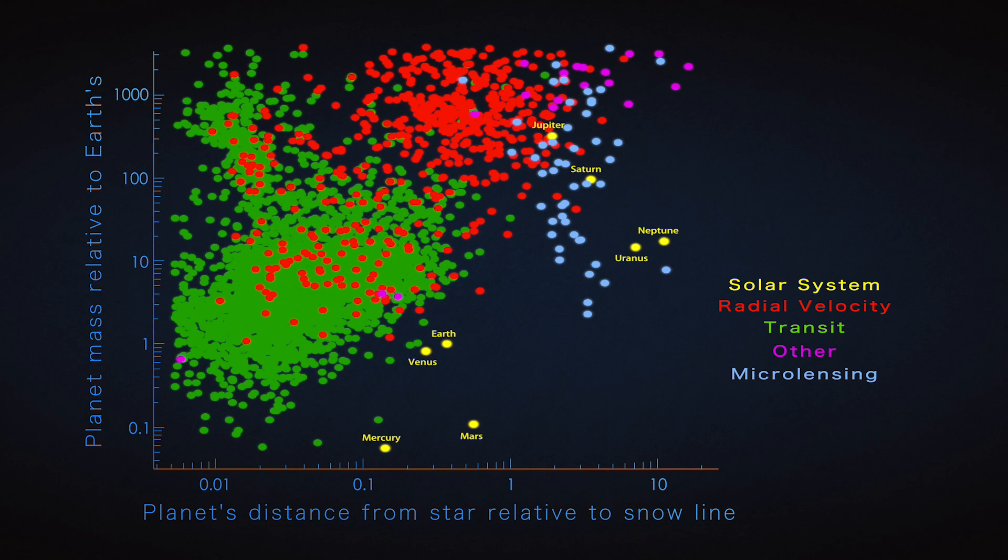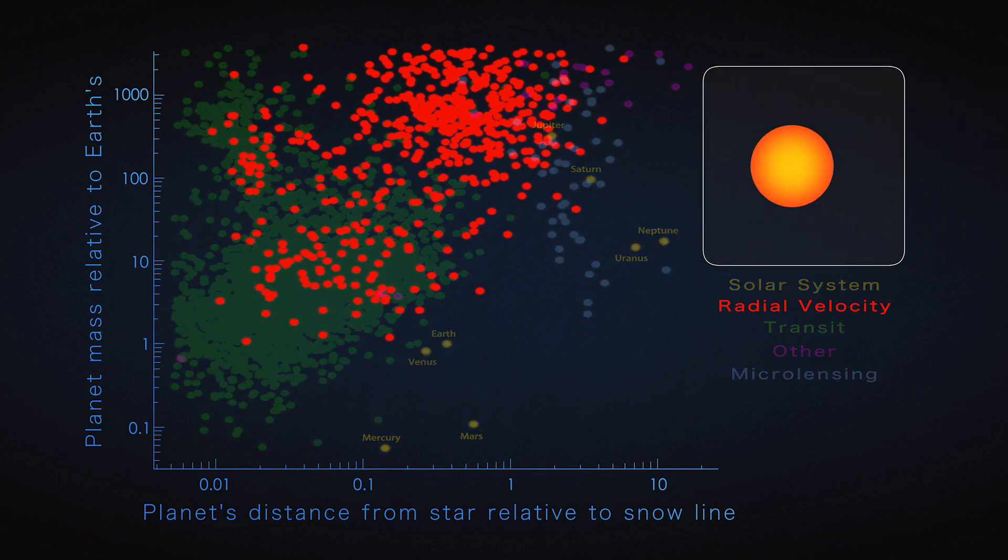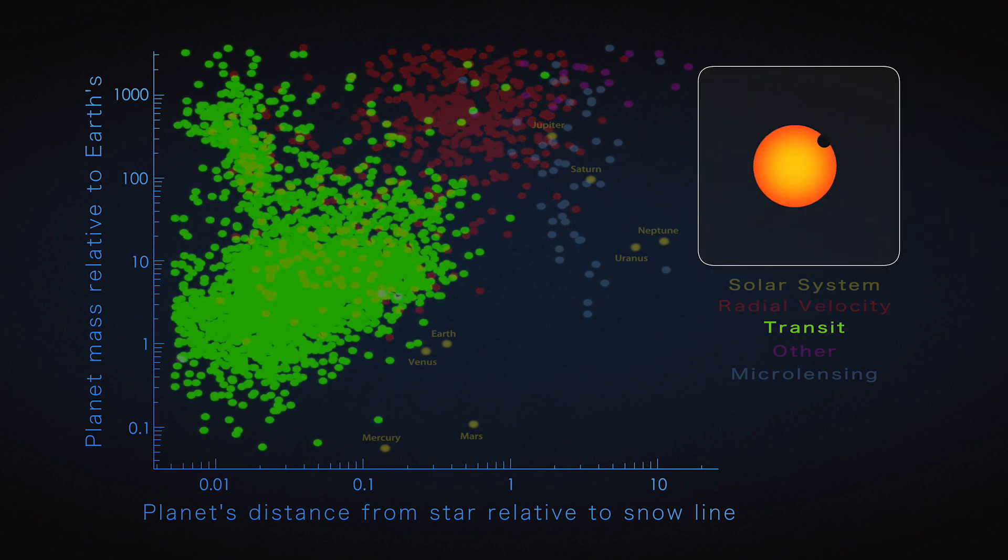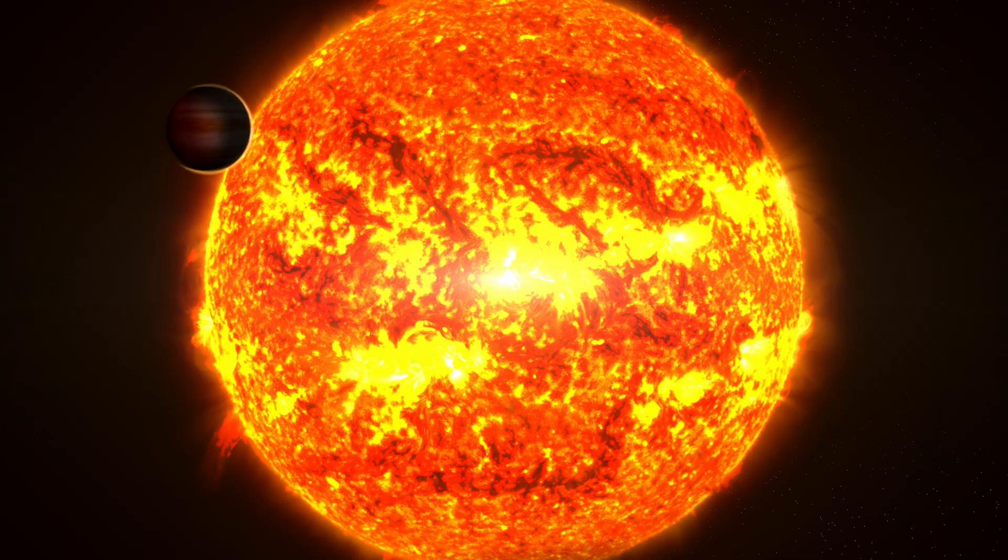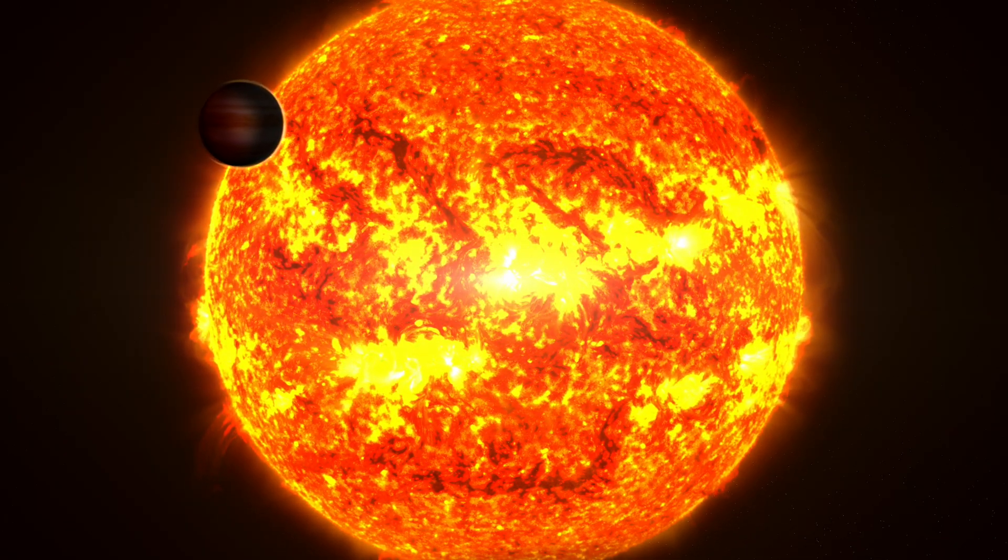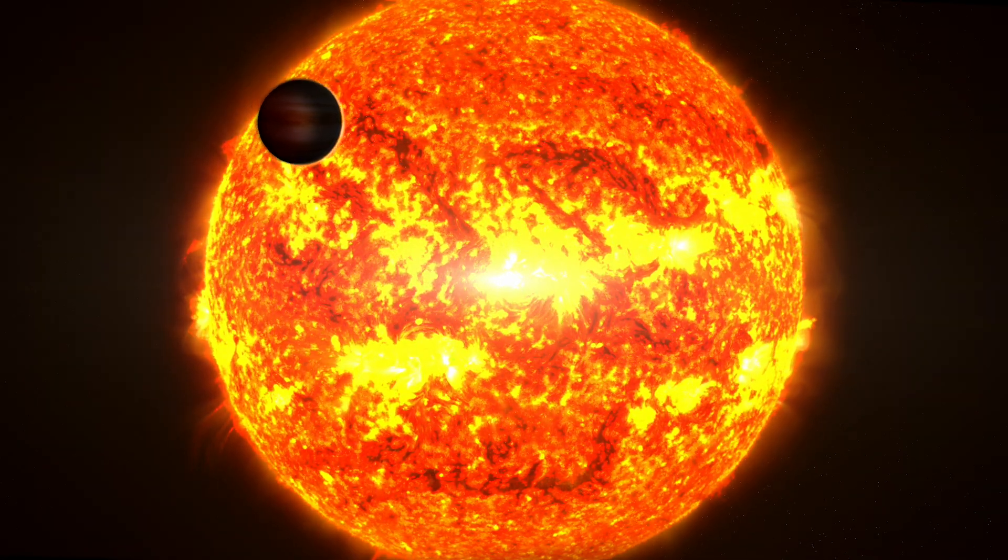Each method of finding exoplanets has different strengths. Radial velocity measurements reveal planets by detecting how they cause the star to move. Transit measurements reveal dips in starlight caused by planets passing in front of their stars. Both work best for massive planets in close orbits and for stars up to hundreds of light-years away.